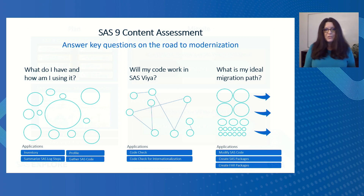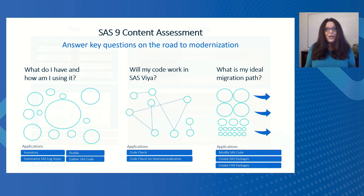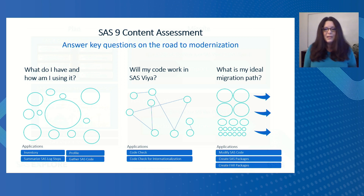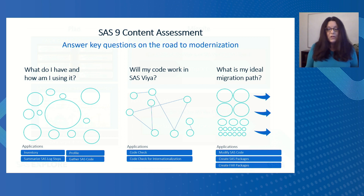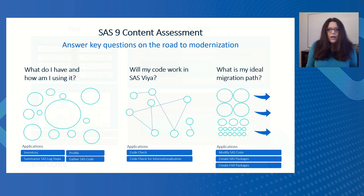When you're ready to understand what features you're using for some of your favorite products, you're going to run Profile. To understand runtimes, you'll use Summarize SAS Log Steps. Some customers realized that inside their favorite products was some code. So if you're using Enterprise Guide, DI Studio, or Stored Processes, you'll use Gather SAS Code to collect that code. The reason you're collecting it is so that when you ask the next question — will my code work in SAS Viya? — CodeCheck will look for your .SAS files as well as the code gathered using Gather SAS Code and answer that question. It will also help identify any code that needs attention before migration, such as external references with hard-coded paths.